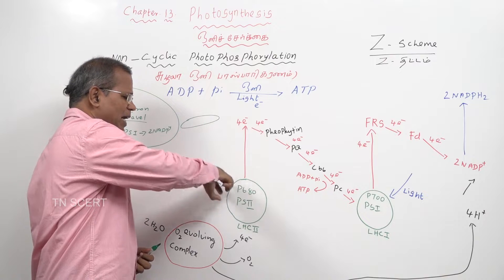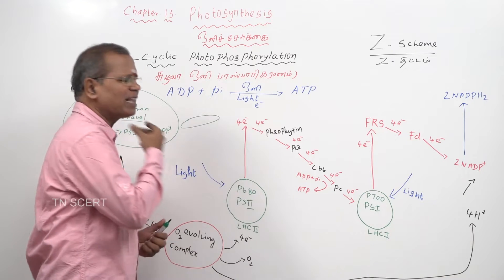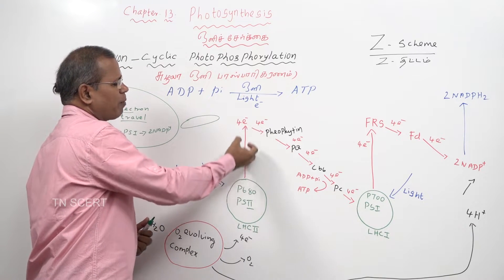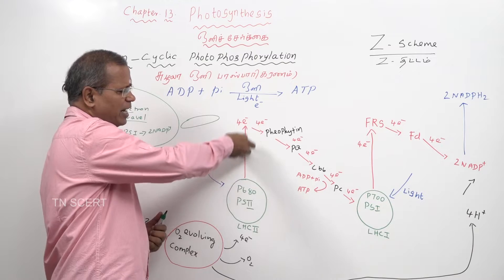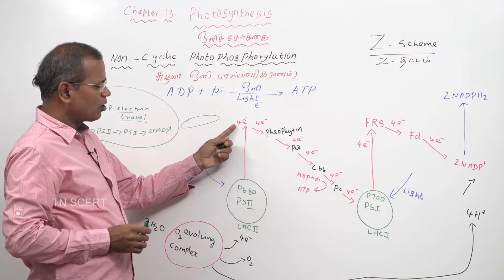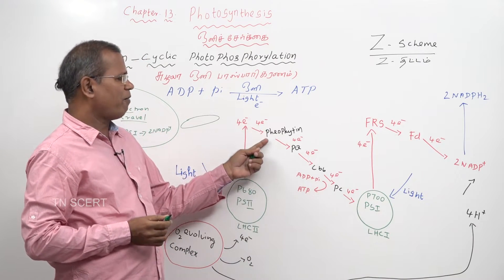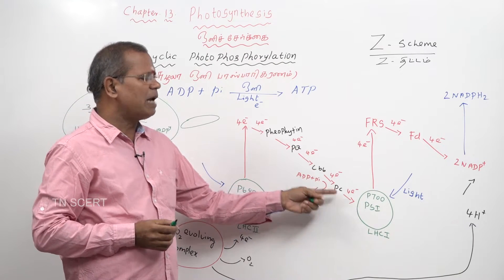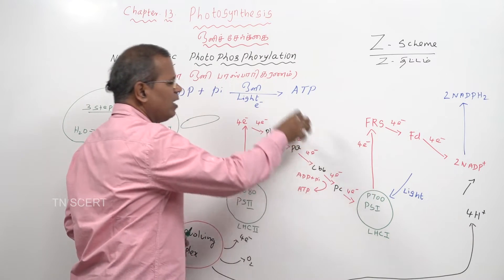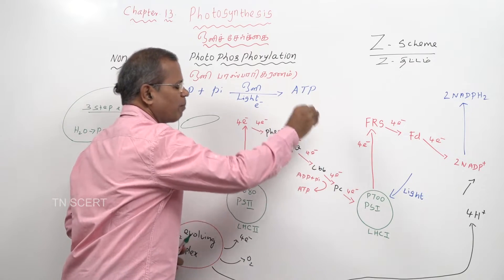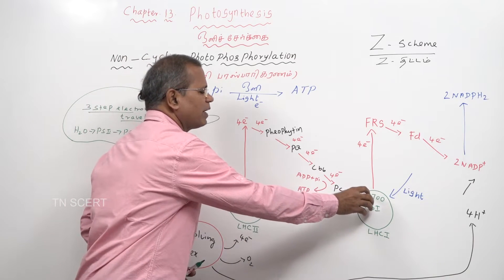Now, a light photon with quantum energy attacks photosystem 2. The electrons present in the outer orbit of PS2 are excited with energy. These excited electrons leave PS2 and reach photosystem 1 through pheophytin, plastoquinone, cytochrome B6, and plastocyanin. During the travel from PS2 to PS1, loss of energy takes place.